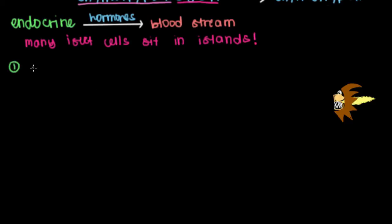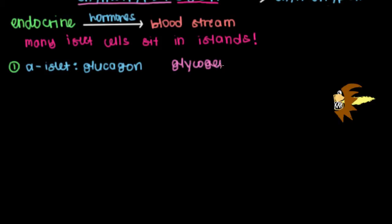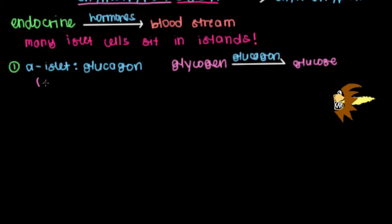First, we have what are called alpha islet cells. These release a hormone called glucagon. The main function of glucagon is to take glycogen — a whole bunch of glucose molecules stacked up on top of each other — and break them down into smaller glucose monomers or molecules. So we're making glucose from glycogen when we release glucagon. It's not just carbohydrates; glucagon is responsible for the breakdown of a whole bunch of macromolecules.